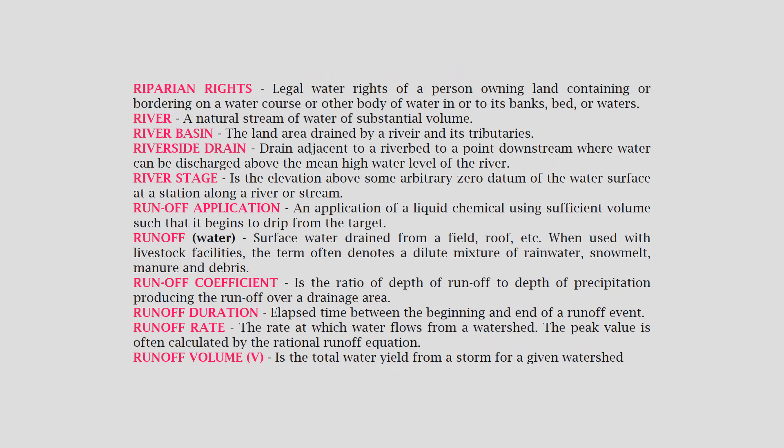Riparian: pertaining to the area along the banks of a river, stream, or lake. Riparian rights: legal water rights of a person owning land containing or bordering on a watercourse or other body of water, in order to use its banks, bed, or waters. River: a natural stream of water of substantial volume.